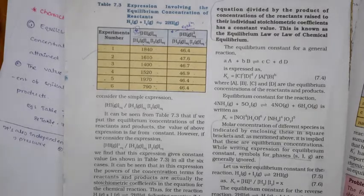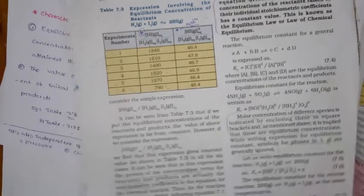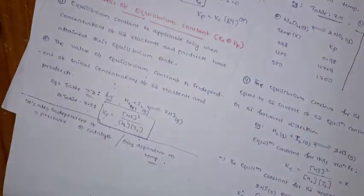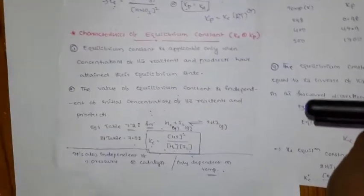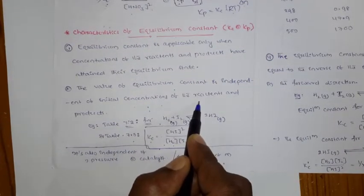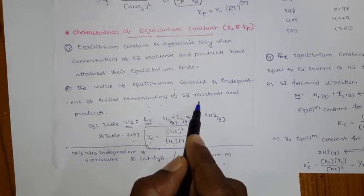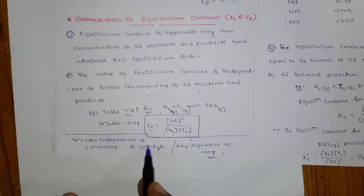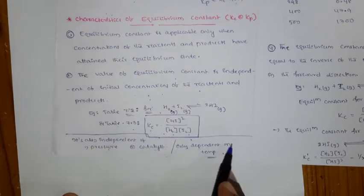The key point to remember: the equilibrium constant is independent of the initial concentrations of the reactants and products. It only depends on the concentrations at equilibrium. Additionally, it is also independent of pressure and a catalyst — it only depends on temperature.